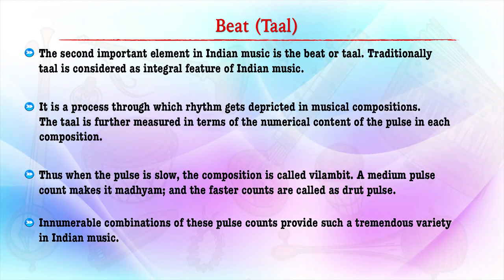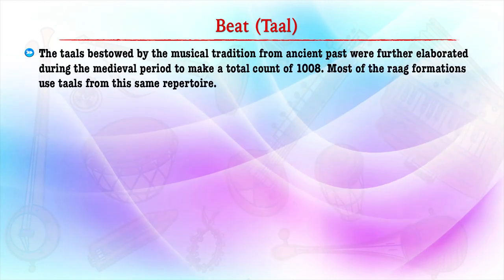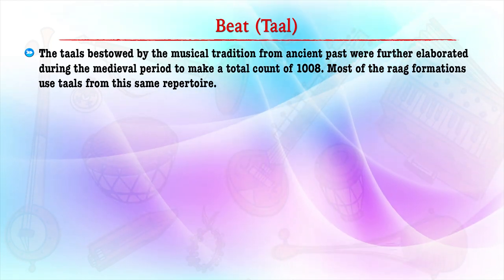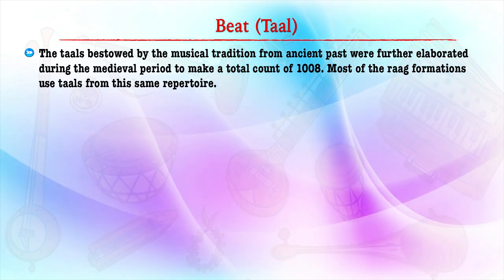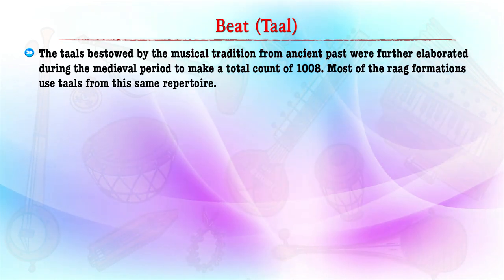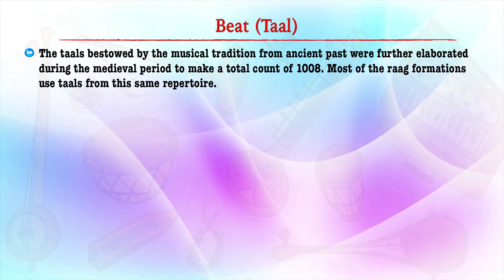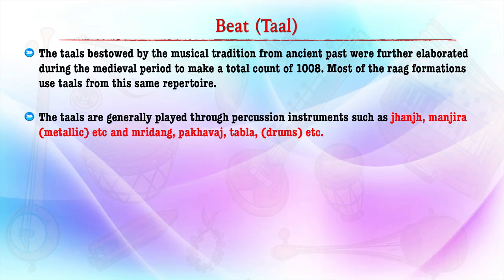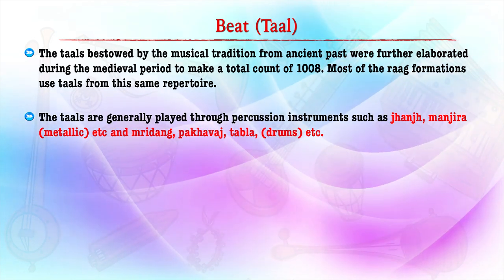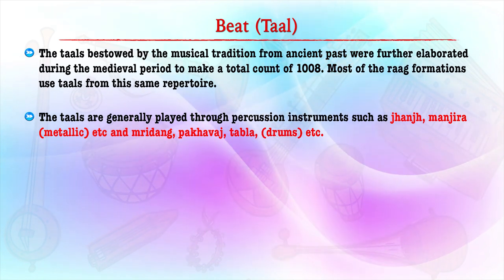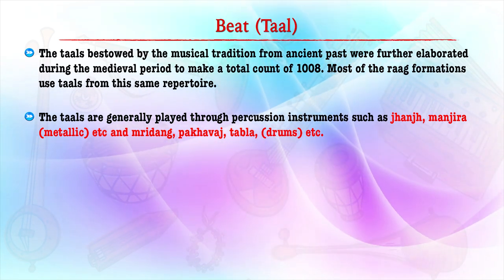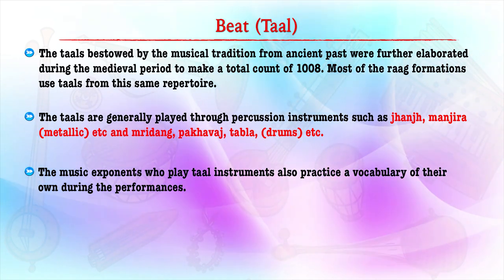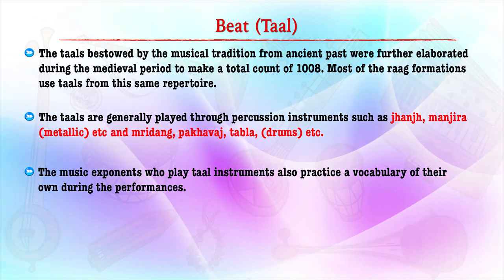Innumerable compositions and combinations of these pulse counts provide tremendous variety in Indian music. The tals bestowed by musical traditions from the ancient past were further elaborated during the medieval period to make a total count of 1008 tals. Most raga formations use tal from this same repertoire. Tals are generally played through instruments such as manjira, mridang, pakhawaj and tabla.